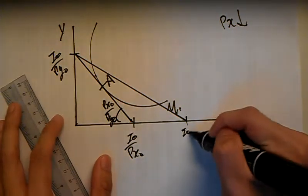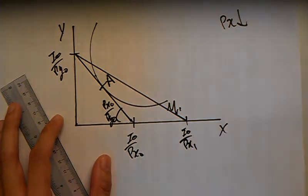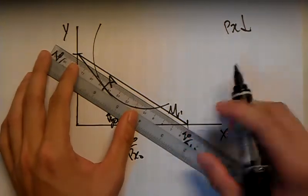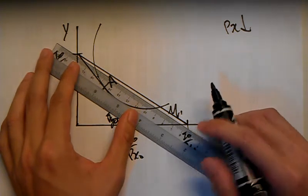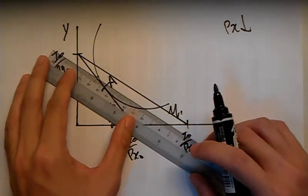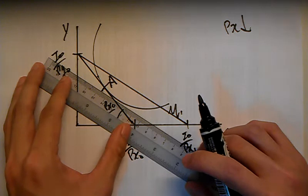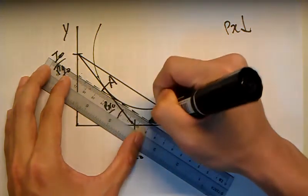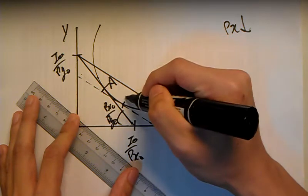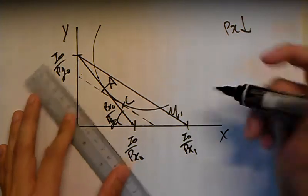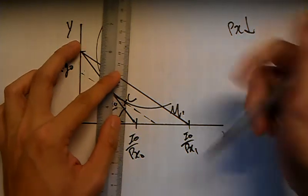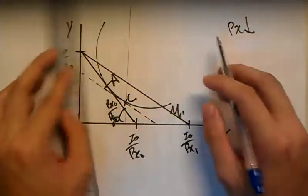Next step: identify the substitution effect under the Hicksian definition of real income. Draw a parallel line tangent to the indifference curve here at point C. Next step, draw a vertical line up at point C.